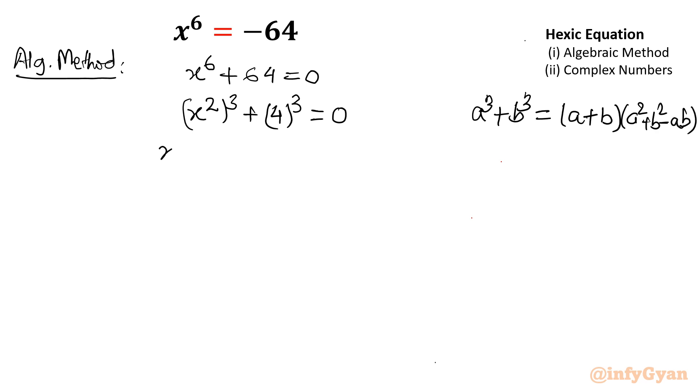So it will become (x^2 + 4)(x^4 + 16 - 4x^2) = 0. Now product of two functions is equal to 0. That means f = 0 or g = 0. So we will write x^2 + 4 = 0 or x^4 - 4x^2 + 16 = 0.